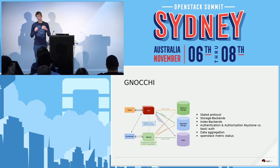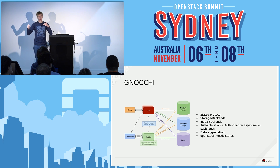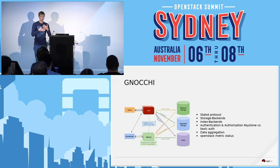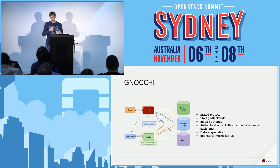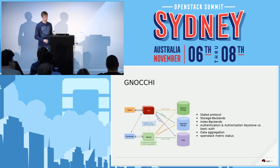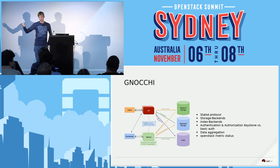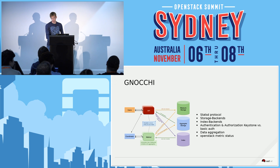Gnocchi has the benefit of better scaling. It also provides something like data aggregation. If you're collecting statistics like load average or whatever over time, the back end will also aggregate your data and won't do the aggregation when you're looking at the stats, so the delivery of your data is much faster. It also has its own statistics plugin, so you could just query OpenStack metric status and get some data back from Gnocchi as well. You could use it in your cloud environment or use Gnocchi as a standalone version using standard HTTP authorization.